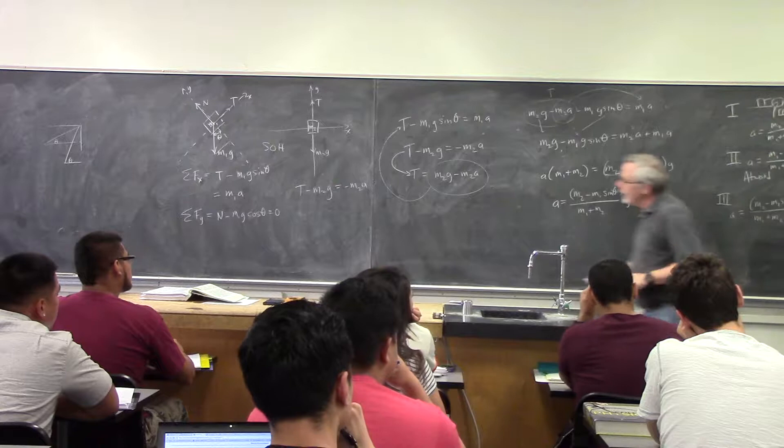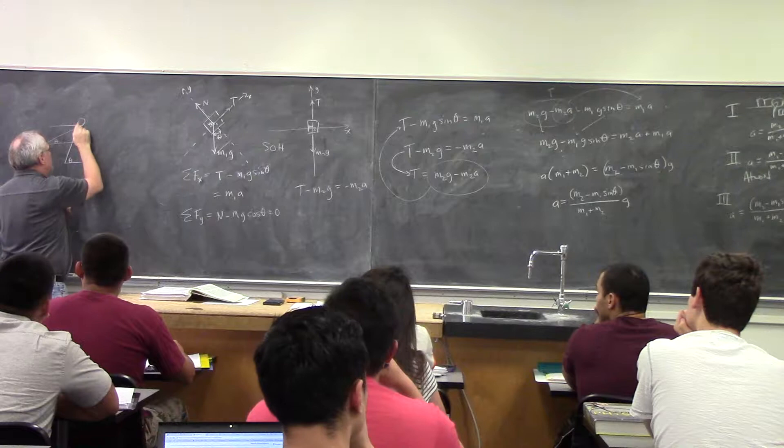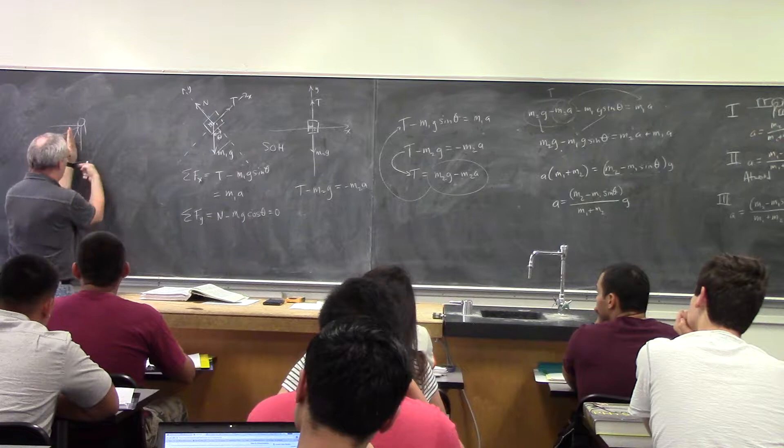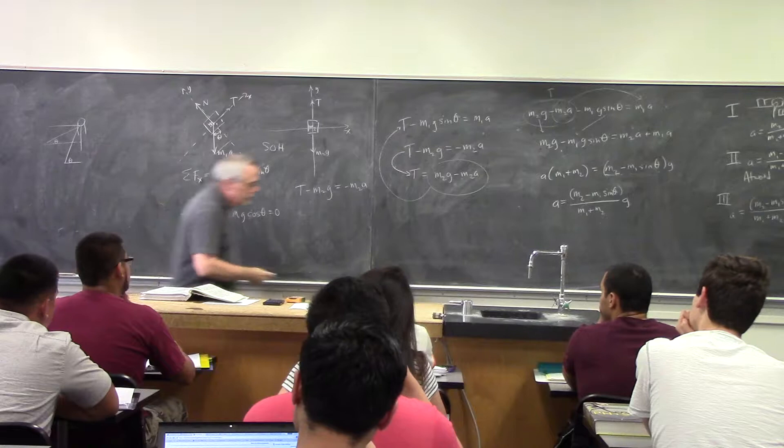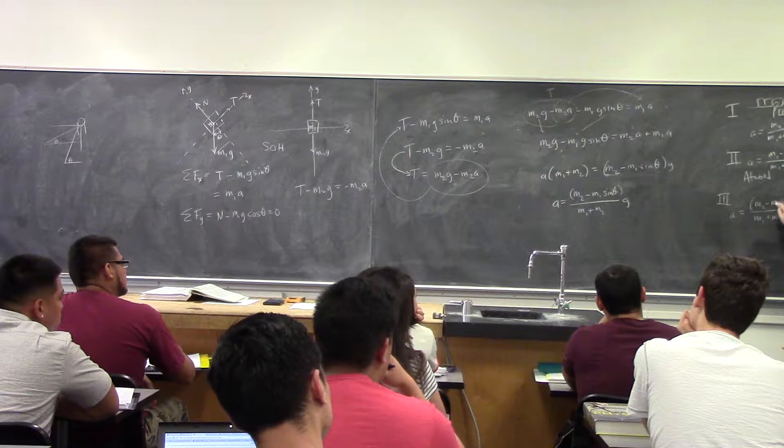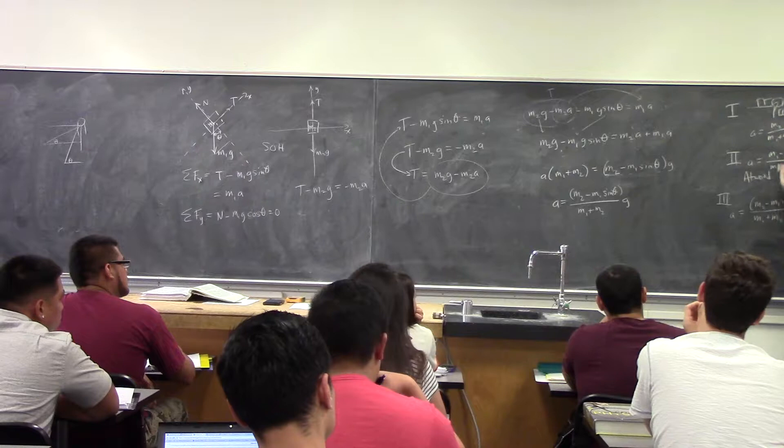On the other hand, if I bring it all the way down to just a pulley with masses hanging on either side, theta goes to 90. Sine of 90 is 1, so I get m₂ minus m₁ over (m₁ plus m₂). Bingo — it takes me back to the Atwood machine. This answer gives me both of those cases in the limit of small angle or big angle, which is really cool.